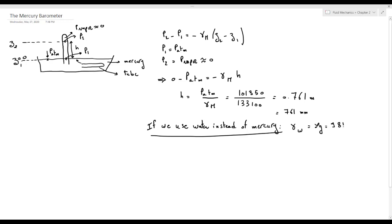So H will be equal to P atmosphere, 101,350 Pascal, over gamma water, 9810. So H will be approximately 13 meters, which is very impractical as a height.